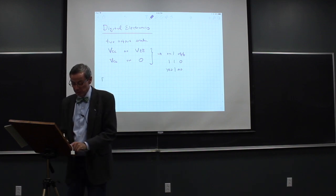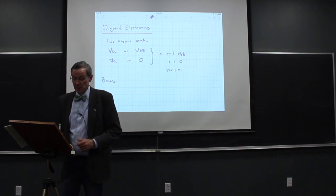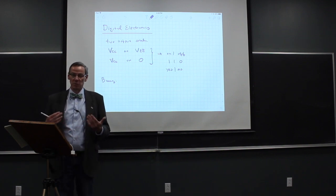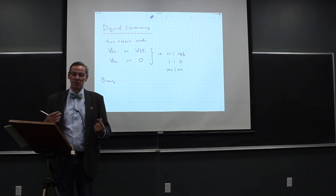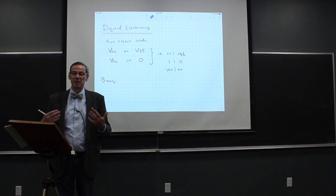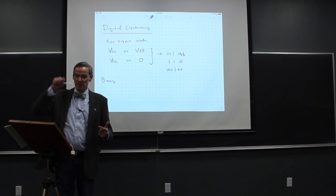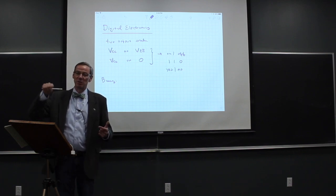In binary, we count up to two. In base ten, we count zero, one, two, three, four, five, six, seven, eight, nine, and then we get a tens digit and a zero — eleven, twelve, and so on.